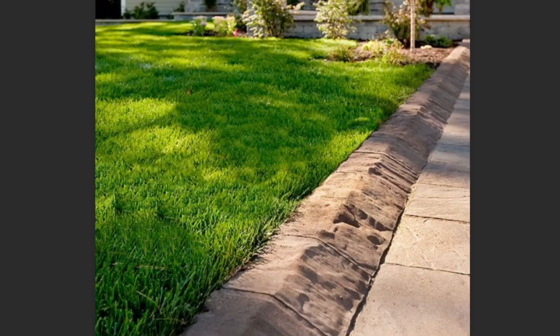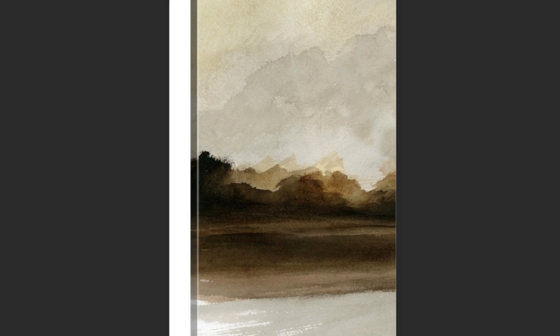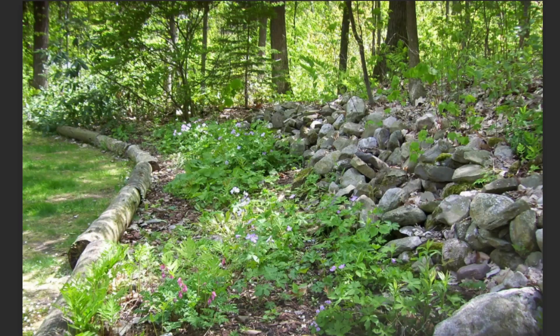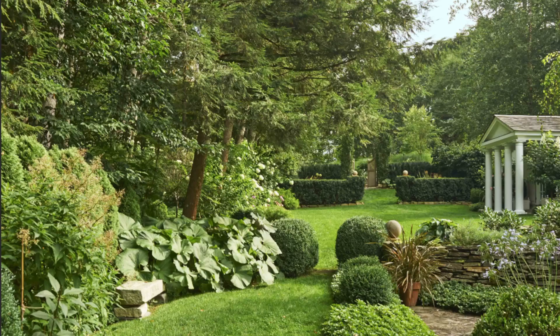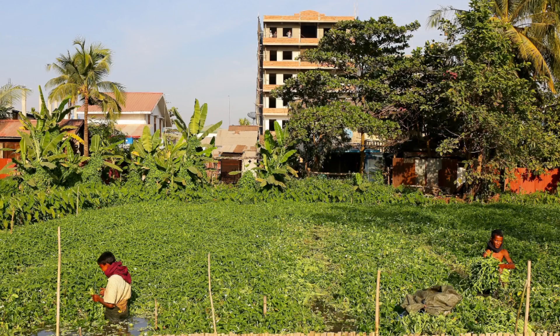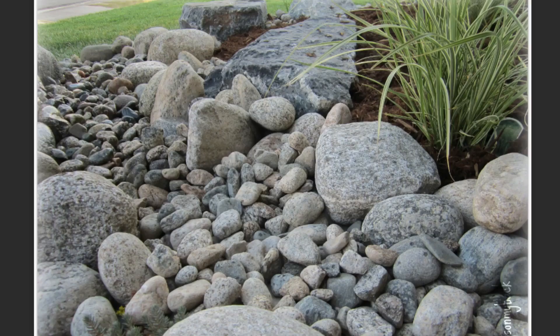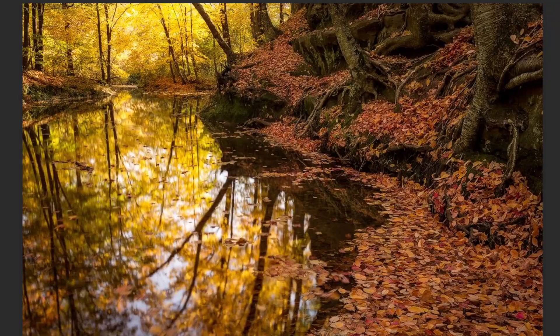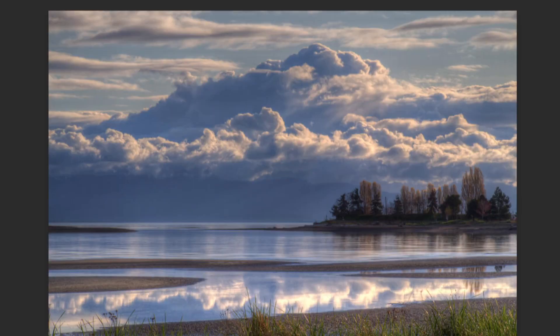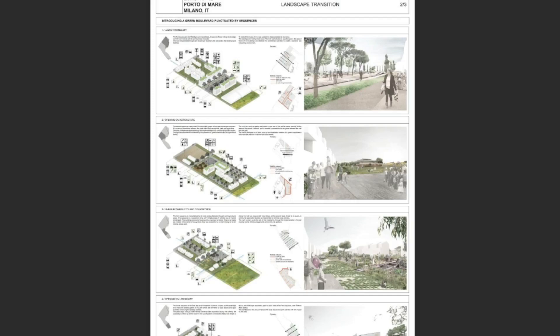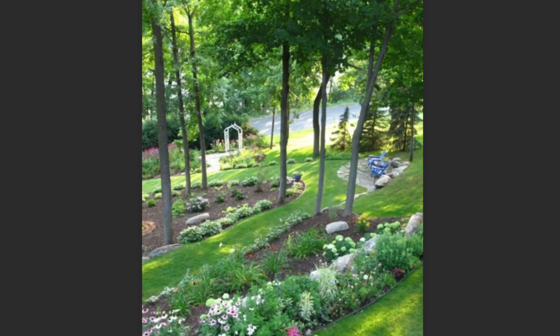For example, in a residential landscape, a transition landscape might be used to create a gradual shift from a formal garden area to a more naturalistic and informal meadow or woodland area. This could be achieved through the use of gradually changing plant species,